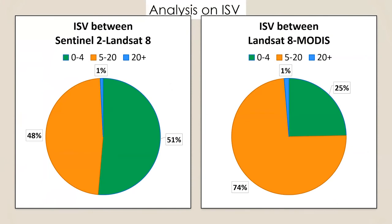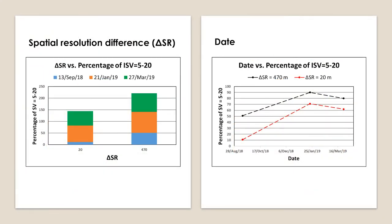When ISV is between 0 to 4, we can say that ISV is low and inconsiderable. When it is between 5 to 20, ISV is high and significant. From these two graphs, we can see that there is more high ISV between Landsat-8 and MODIS than between Sentinel-2 and Landsat-8. These graphs show that the larger the spatial resolution difference, the more inter-satellite variability that can be detected.